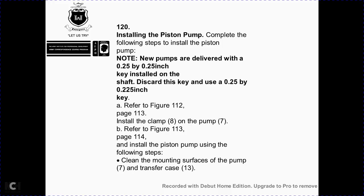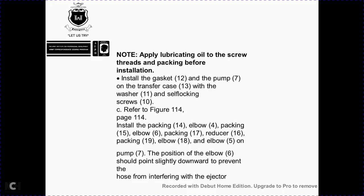Install the piston pump. Complete the following steps: note that new pumps have delivered tolerances. Install the shaft — discard the old key and use the 25,000-inch tolerance. Refer to figure 1-12, page 1-13: install clamp 8 on pump 7. Refer to figure 1-13, page 1-14: clean the mounting surface of pump 7 and transfer case 13. Do not apply lubricating oil to screw threads before installation. Install gasket 12 on pump 7 and transfer case 13 with washer 11 and self-locking screws. Refer to figure 1-14, page 1-14: install elbows 4, 6, and 5 with packings 15, 17, 19, reducer 16, and elbow 18 on pump 7. Position elbow 6 slightly downward to prevent the hose from interfering with the injector.